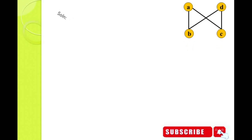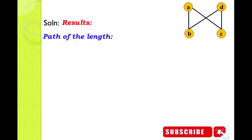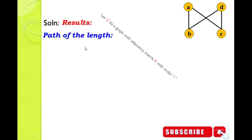Before we solve this problem, we should recollect two important results. One is how to find the path of a given length. The second result is how to find the adjacency matrix.